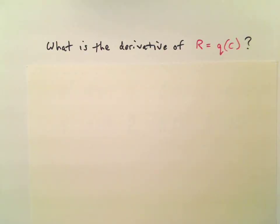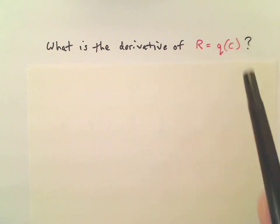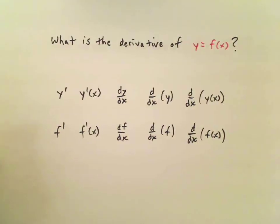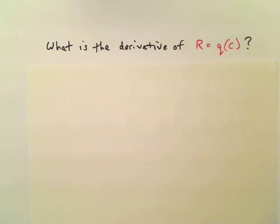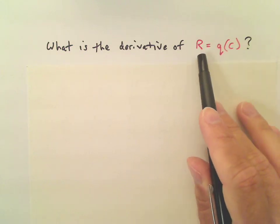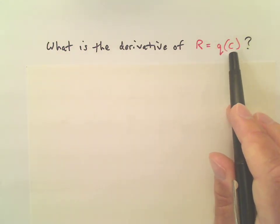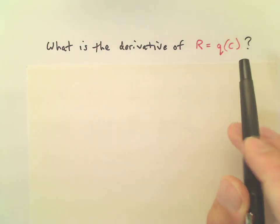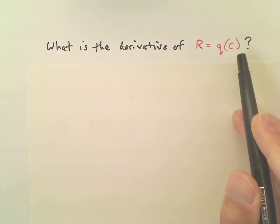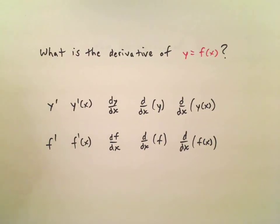Here's an interesting change of pace. What is the derivative of R equals q of c? Now, this doesn't look familiar, but it's in exactly the same format as what we were looking at back here. So when you look at this, you should just think of the r as being like the y, and the q being like the f, and the c being like the x. And whatever expression you have involving r or q or c is going to mimic what we were looking at right here.